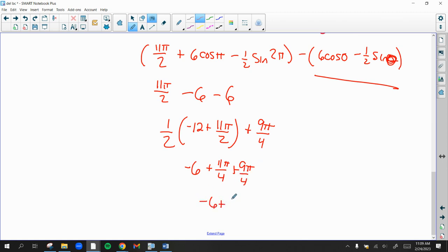So I'll have negative 6 plus 11 pi over 4 plus 9 pi over 4, which is negative 6 plus 20 pi over 4, which is 5 pi. Or you can just say this area is 5 pi minus 6.